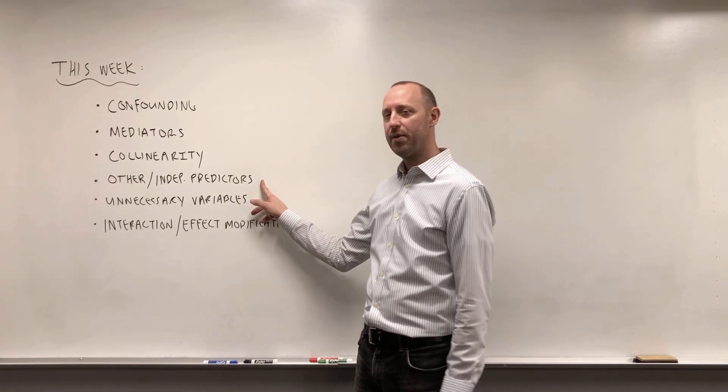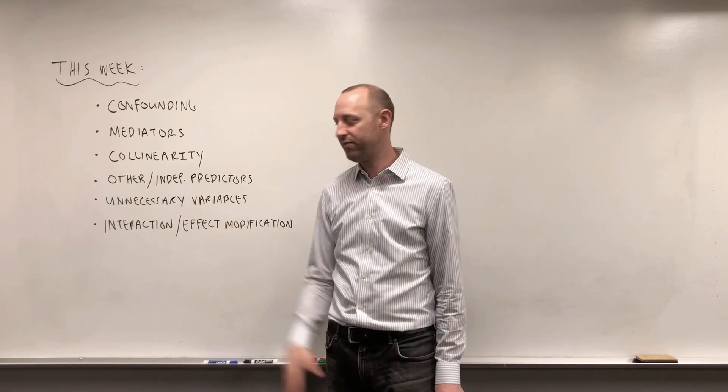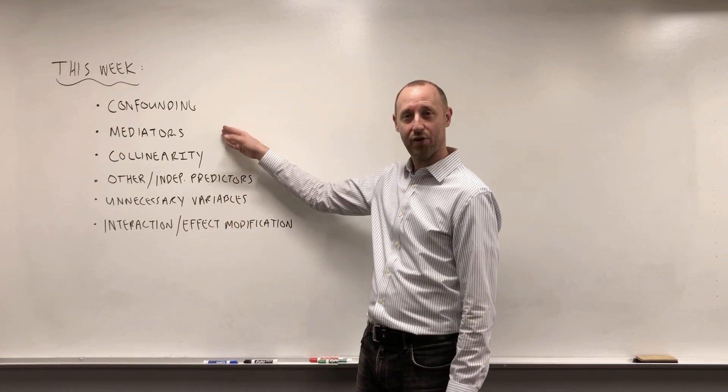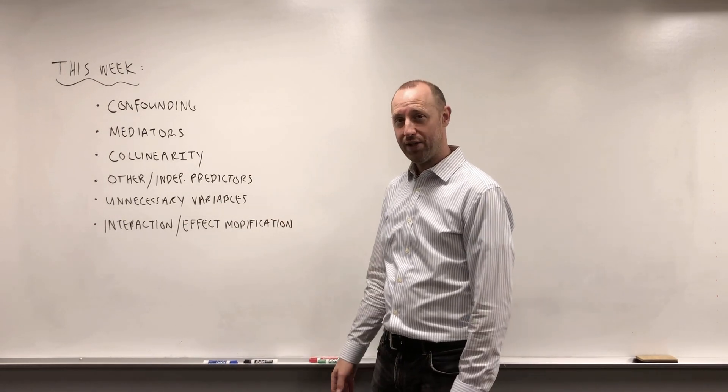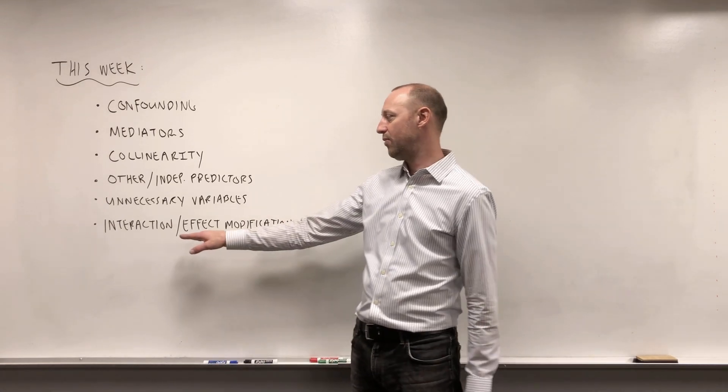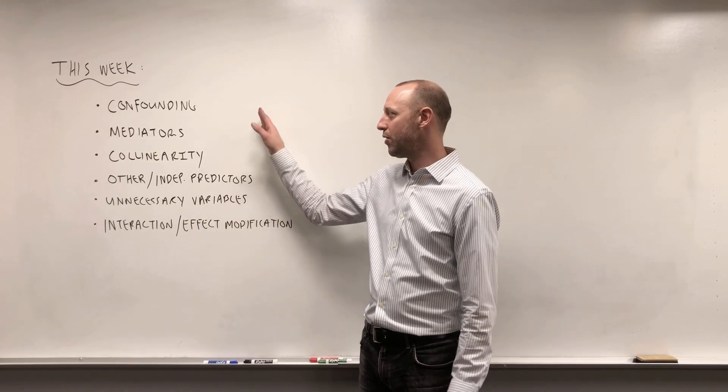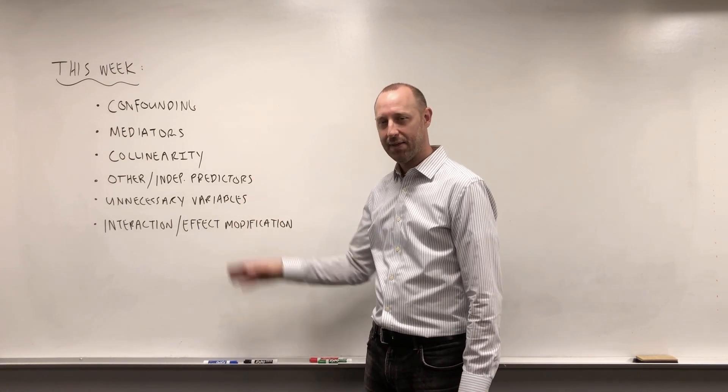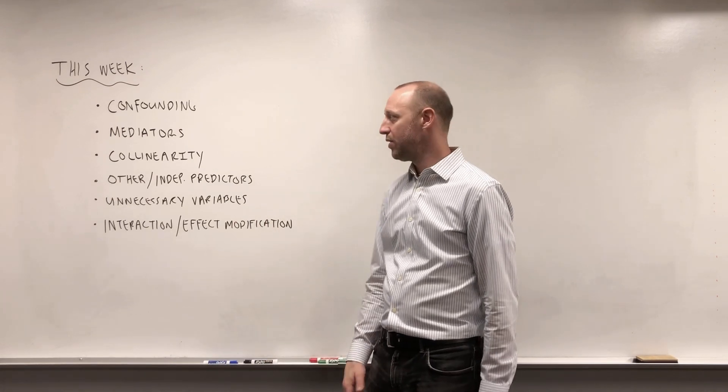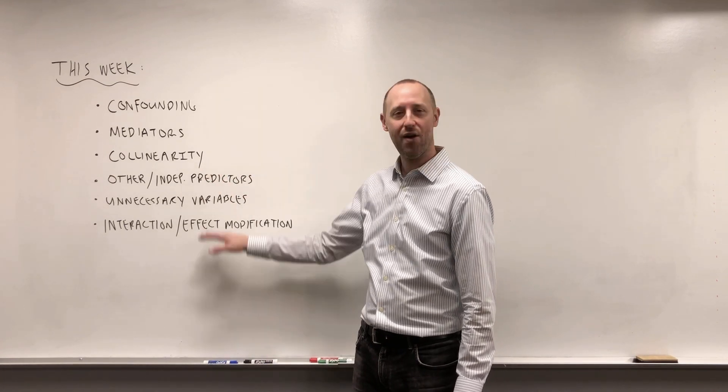We're going to talk about what does it mean for a variable to be another independent predictor of the outcome. That's where it's predictive of the outcome but not a confounder, mediator, or collinear. What's an unnecessary variable, the variables we don't need to include in the model, and what is interaction or effect modification. We're talking about all these in compartments on their own one idea at a time, and then in the following week we're going to tie them all together and look at model building and variable selection.